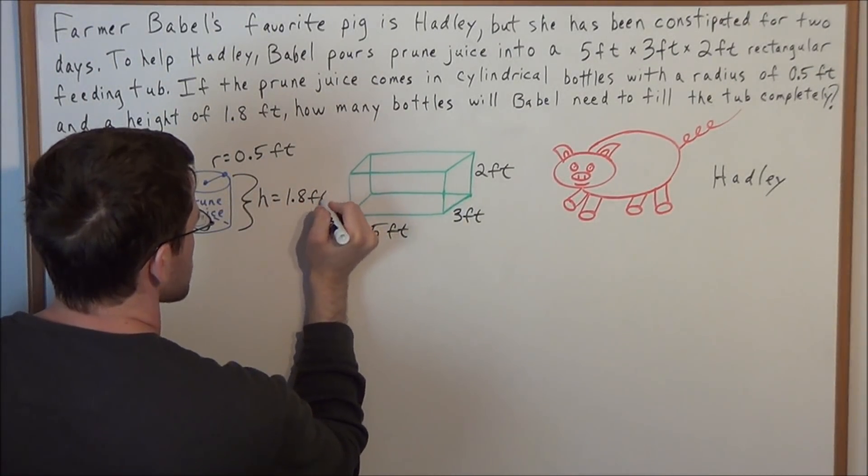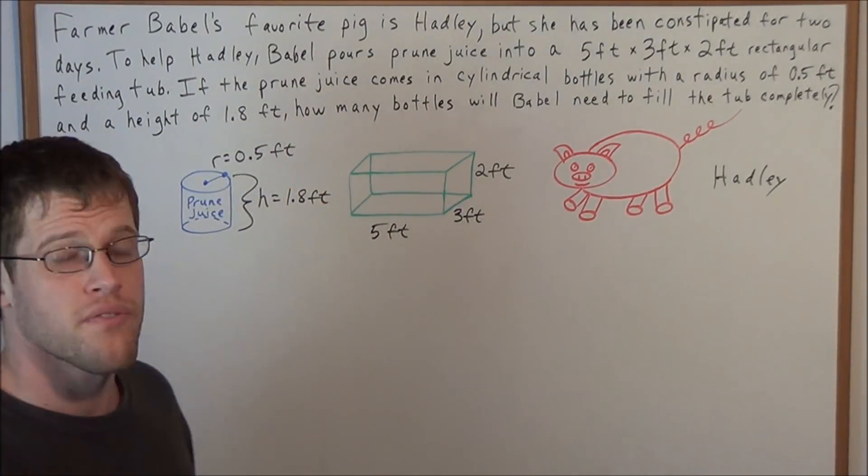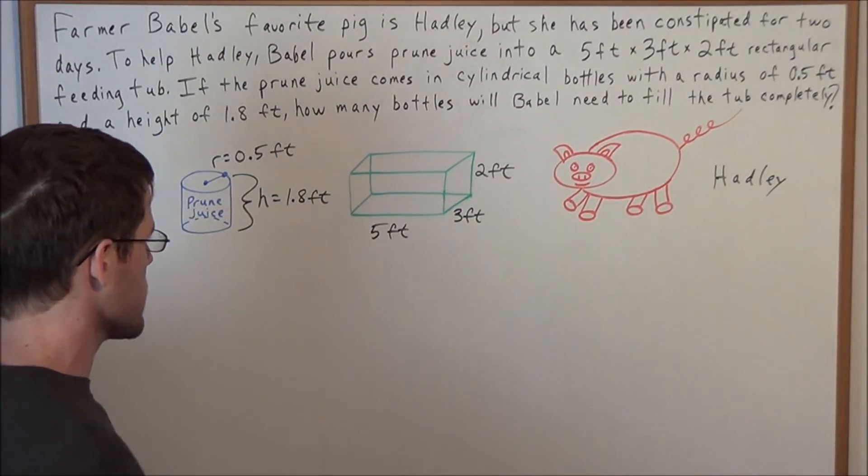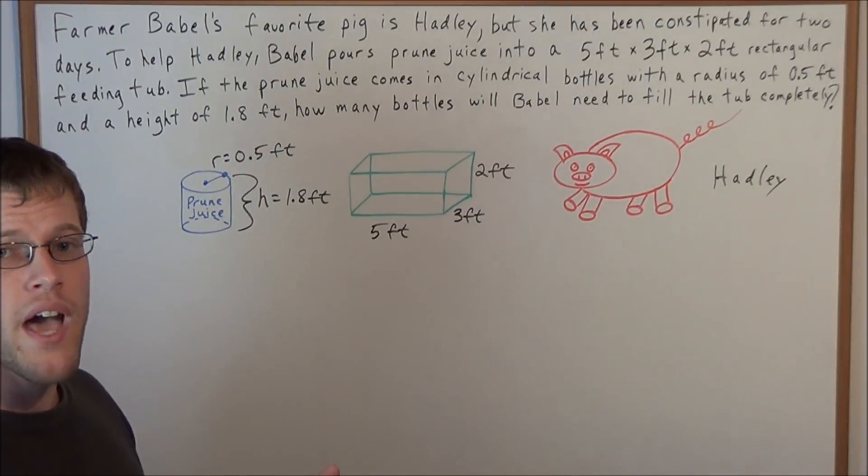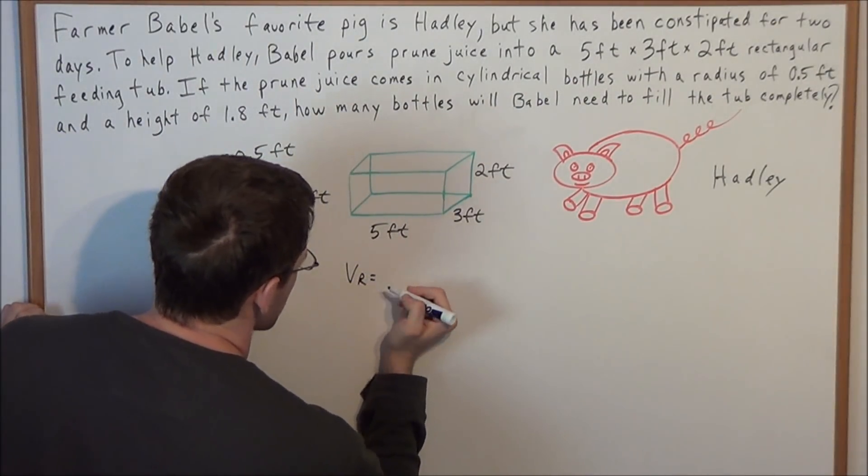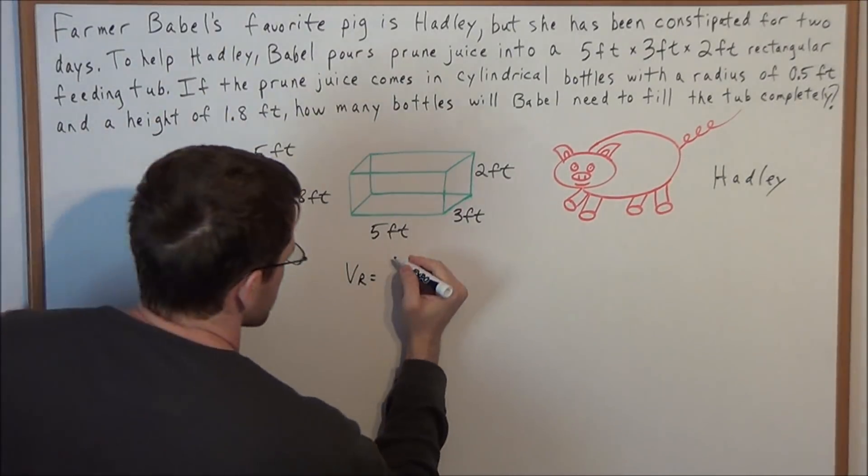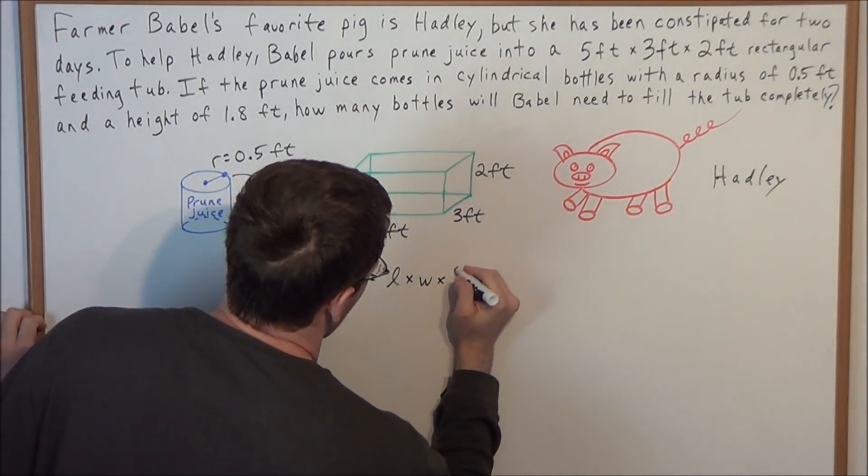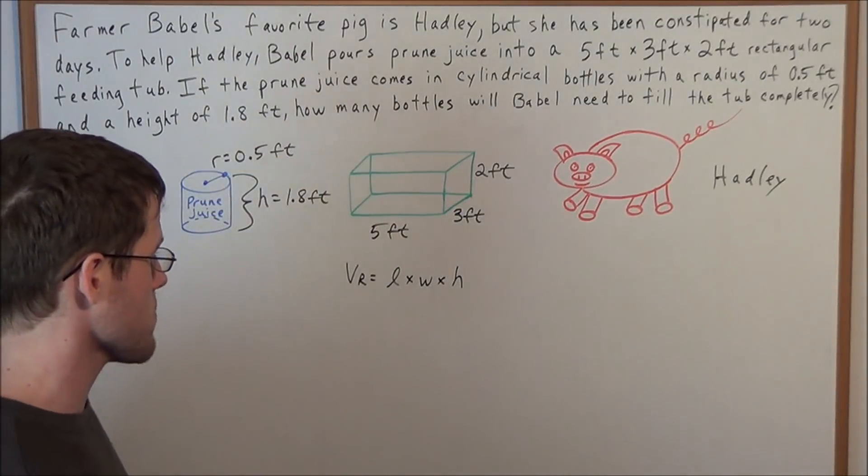So now that everything is labeled, what should we do next? We should find the volume of both of these solids. And in general, when we have a rectangular prism, the volume of a rectangular prism, which we'll denote with Vr, is equal to the length times the width times the height of that rectangular prism.